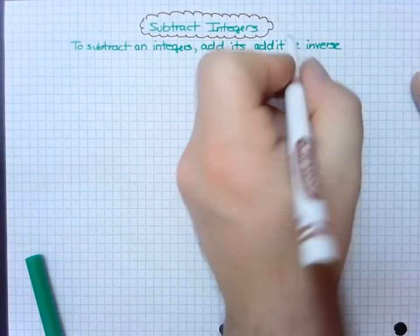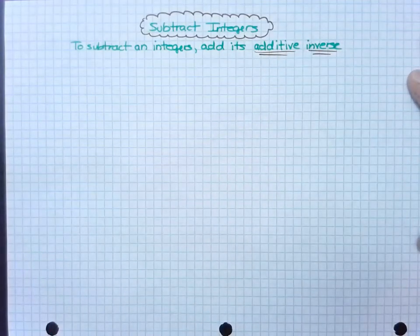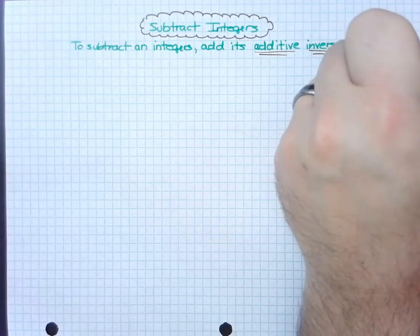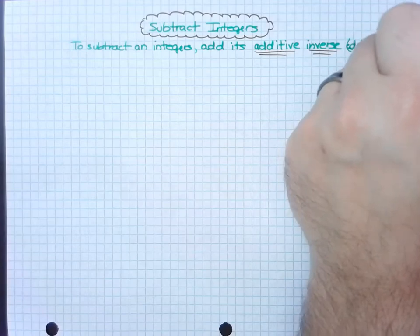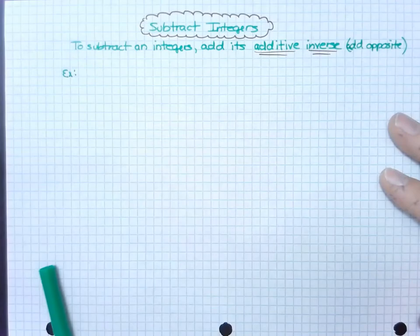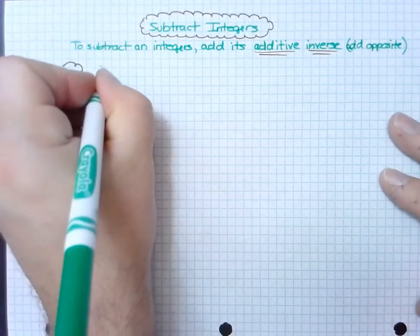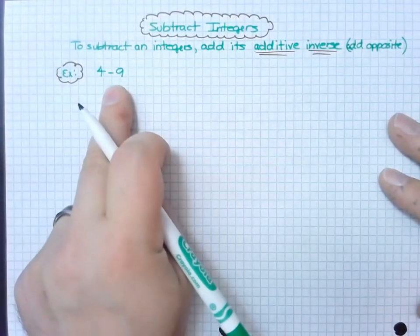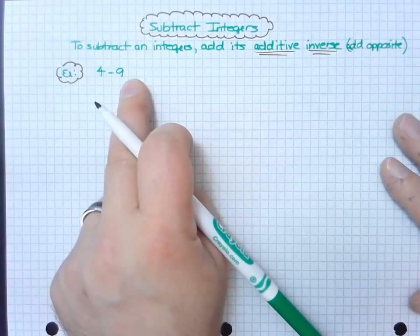Let's take a look at an example. What happens if I have 4 minus 9? Well, just using some conceptual understanding here, I have four positive values and subtracting nine from it, which means I have to go past zero on the number line.